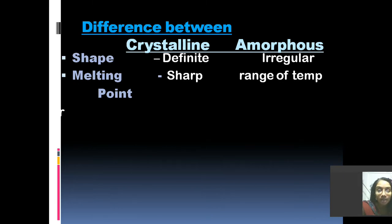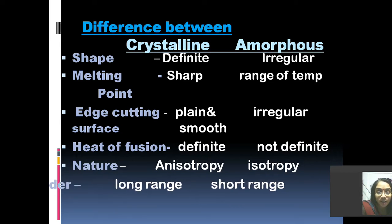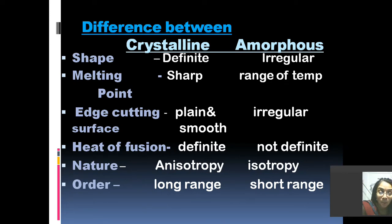Other differences between these two solids include the cleavage surface and heat of fusion. Regarding cleavage surface: when you cut a crystalline solid, you can see a smooth and plain cut surface, whereas in amorphous solids it is irregular — you might have experienced this when cutting an eraser, which is amorphous in nature, and how much irregularity and sharpness is seen in the cut area. Heat of fusion, meaning the amount of heat absorbed by a crystalline object to convert to another state, is a definite amount because they have a sharp melting point and regular arrangement, whereas in amorphous solids the heat of fusion is not definite.